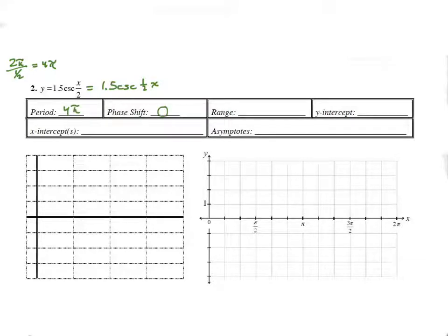Our phase shift is 0. There is nothing adding or subtracting to x inside of cosecant. It would have to be inside parentheses to be a phase shift. So because there's no phase shift, I'm going to go ahead and start my x values at 0 on my cheater graph.